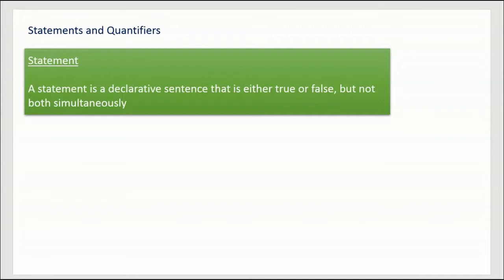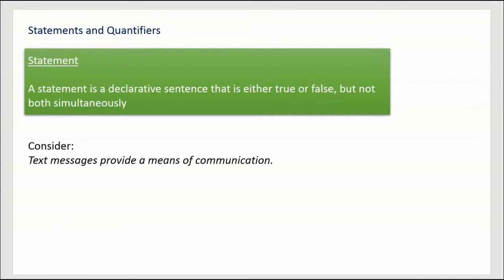We're going to have some examples where we decide whether we have a statement or not. What's important about a statement is you can definitely determine whether it's true or false. If you have something that's not determinable if it's true or false, then it is not a statement. The first example: 'Text messages provide a means of communication.' This is not about whether you think it's true or false — it's whether it can be determined if it's true or false. And sure, text messages provide a means of communication. That is definitely a statement.